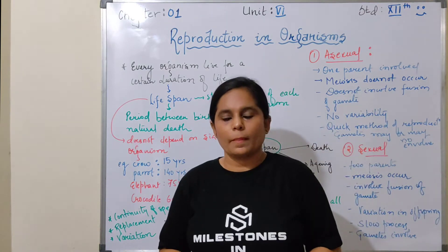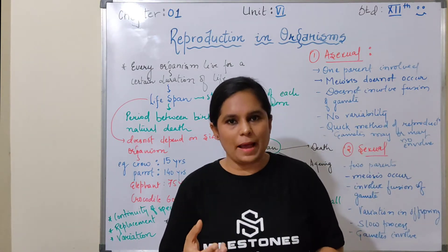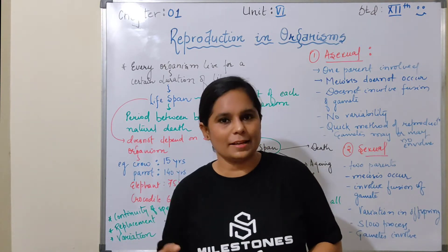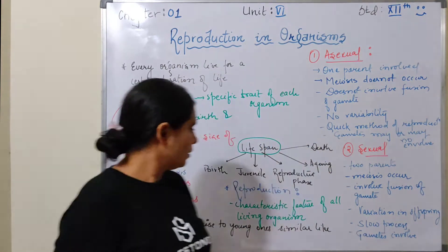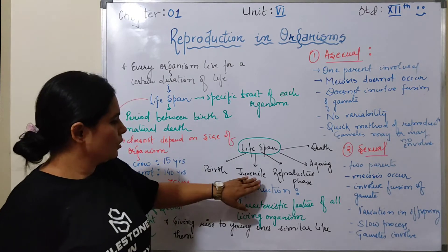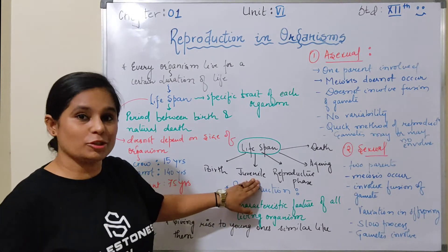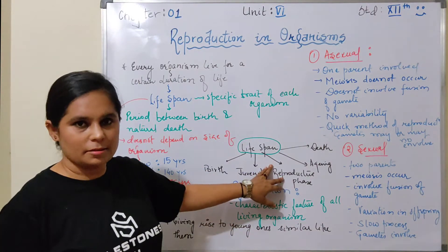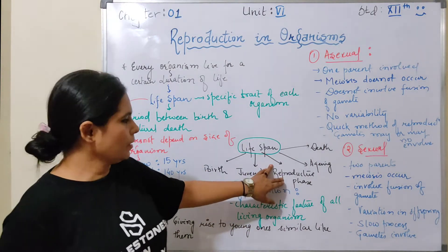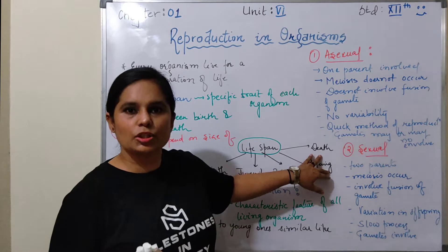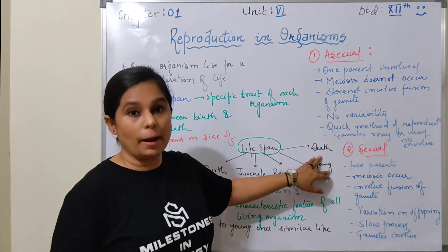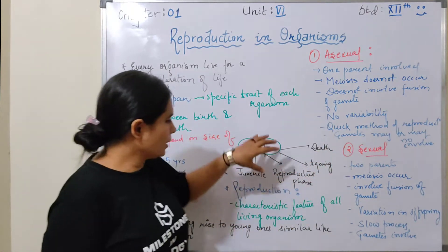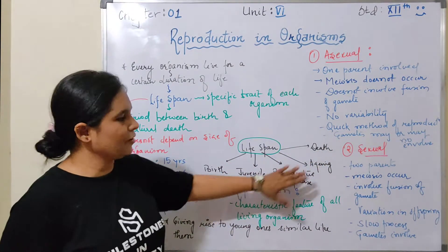So I can say that the life span of an organism is a specific trait. This life span has different phases: birth, then the juvenile phase when they are immature, then the reproductive phase when they are capable of reproducing, then senescence — which is called aging or 'burhappa' in Hindi — and finally natural death. So in any organism's life span, there are these different phases.